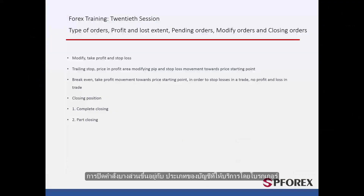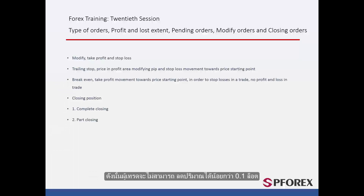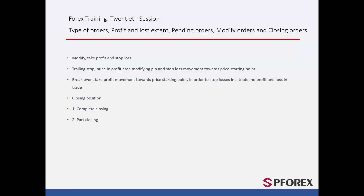Partial closure of an order depends on the type of account provided by a broker. For instance, the volume provided by FXPro on each order is 0.1 lot, so a trader cannot reduce the volume to less than 0.1 lot. However, ICM Brokers provides the volume of orders with 0.01 lot, so orders with 0.1 lot volume can be partially closed.